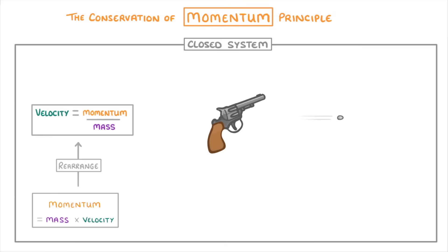So if we knew that this gun had a mass of 2 kilos, and that a 5 gram bullet was fired out at a velocity of 120 m per second, we should be able to work out the velocity of the gun's recoil.